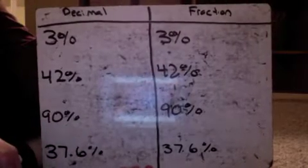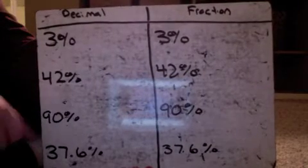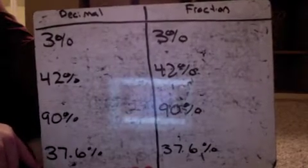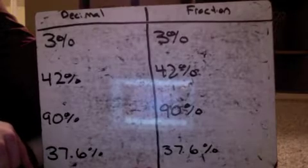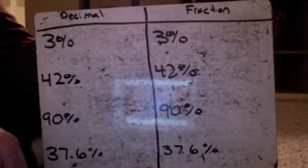All right. Here are practice examples for you. And there's the same things on both sides, 3%, 42%, 90%, 37.6%.